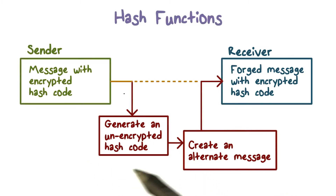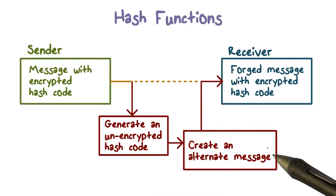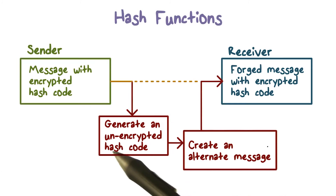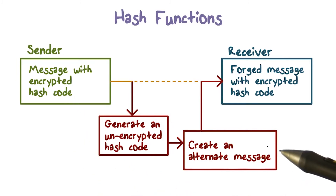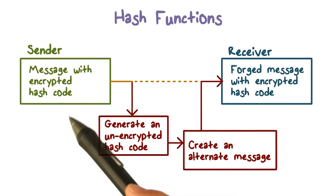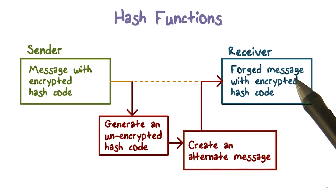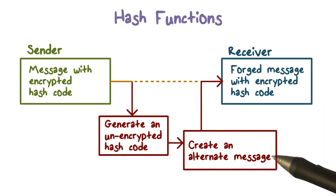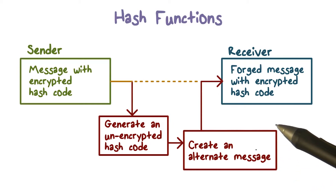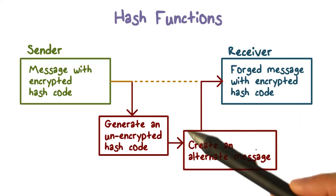Of course, this hash code is not encrypted because the attacker does not have the key. Then, if the weak collision resistant property is not true, the attacker will be able to find another message such that its hash value is the same as the hash value of the original message. Then the attacker simply forwards to the receiver the forged message along with the original encrypted hash code. The receiver will not be able to tell that the message has been modified by the attacker, because the forged message has exactly the same hash value as the original message.